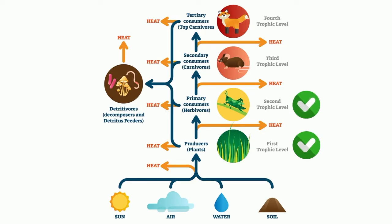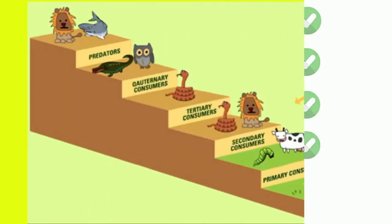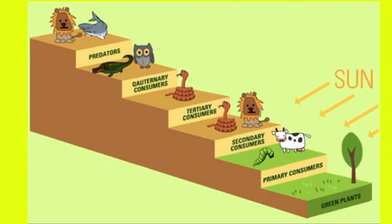The organisms that eat the primary consumers are called secondary consumers. In this example, the mouse eats the grasshopper. The organisms that eat the secondary consumers are called tertiary consumers. In this food chain, it is the fox. Some food chains have additional levels such as quaternary consumers — carnivores that eat tertiary consumers. And then there are organisms at the very top of a food chain called apex consumers.